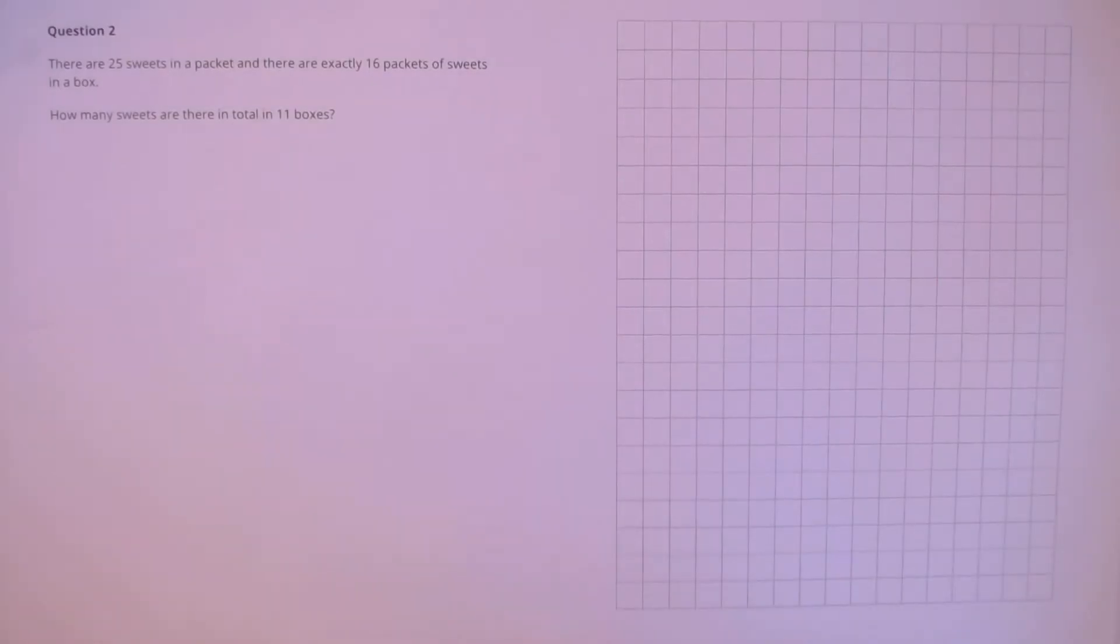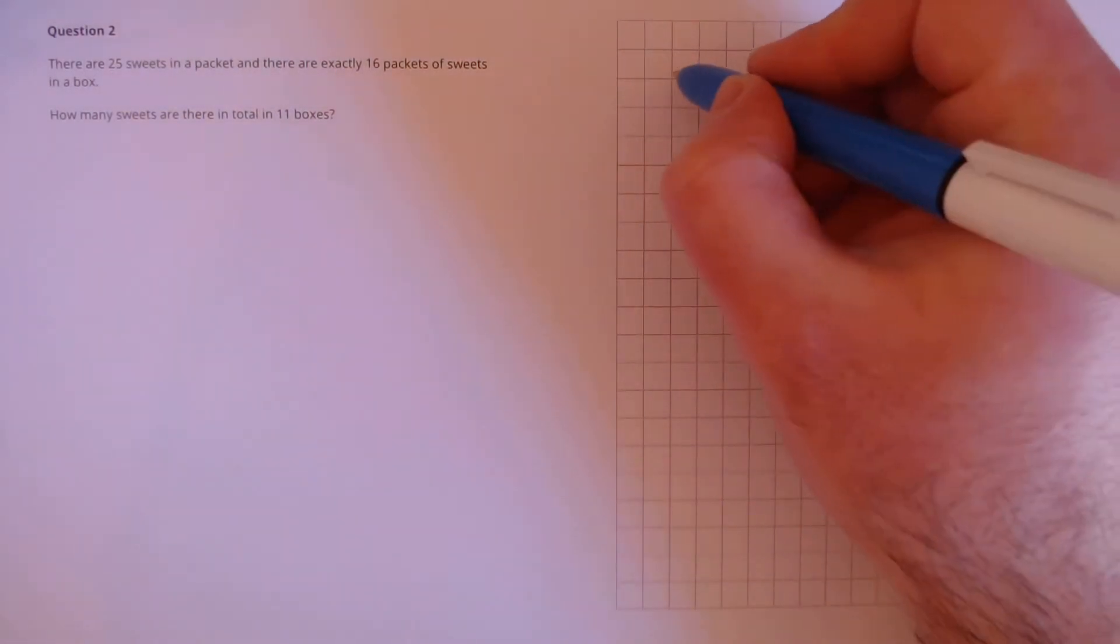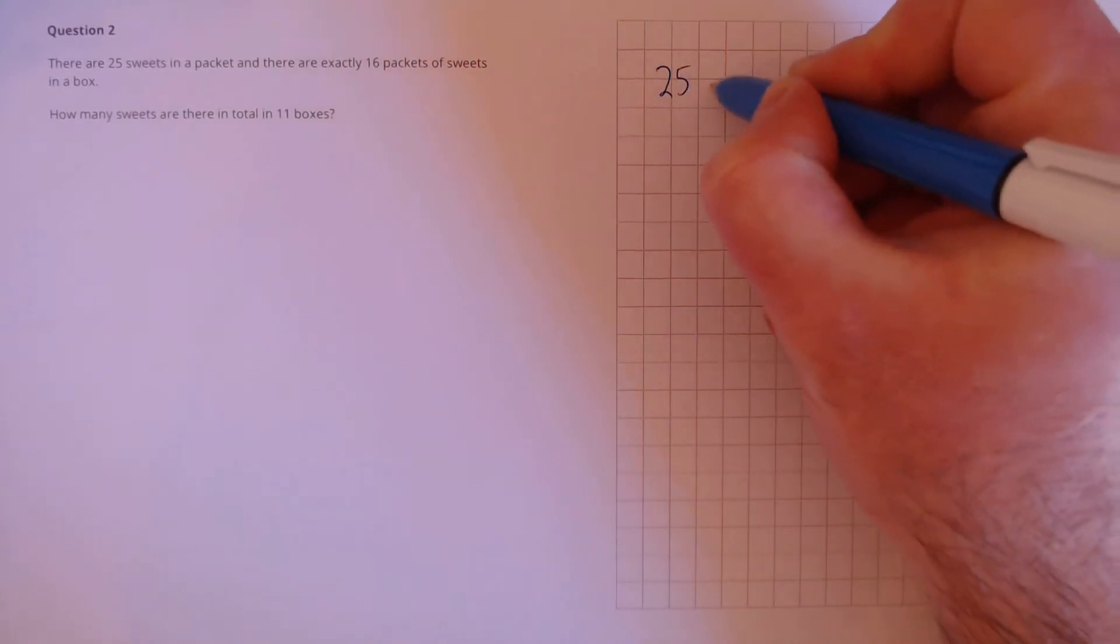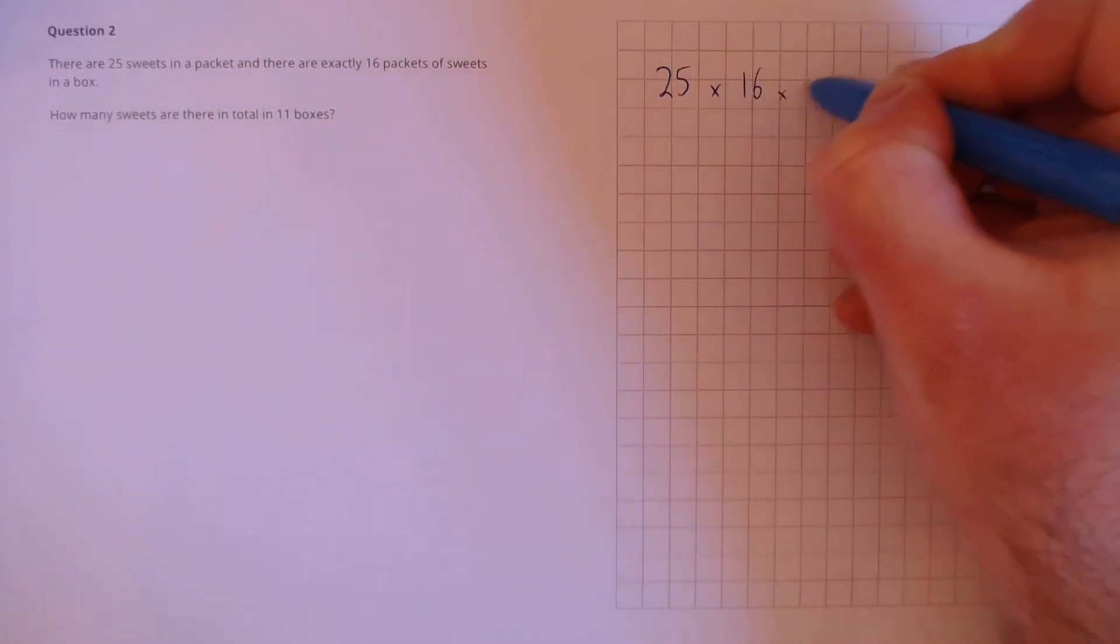Question 2. There are 25 sweets in a packet, and there are exactly 16 packets of sweets in a box. How many sweets are there in total in 11 boxes? We need to work out the answer to 25 multiplied by 16 multiplied by 11.